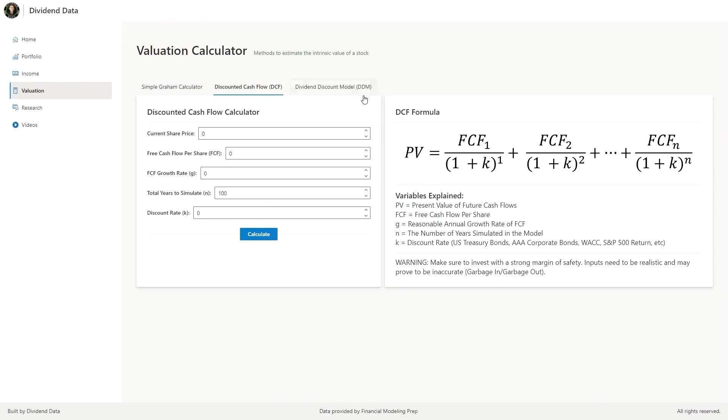So how do we actually calculate discounted cash flow? I built out this handy little calculator to help understand. The main inputs are free cash flow per share, the reasonable annual growth rate of free cash flow, the total number of years simulated, and the discount rate. Let's explain these in more detail.